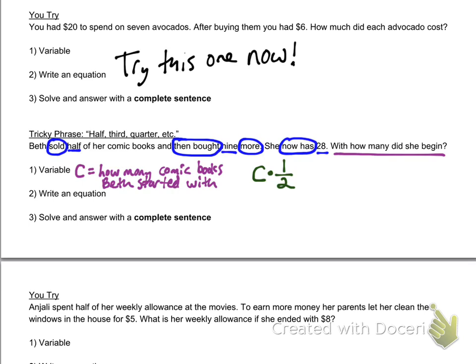Beth sold half of her comic books and then bought nine more. Let's circle these. She sold half. She started with C and then sold half of them. That's going to look like this: C times one-half. If she then bought nine more, that means she's going to add nine. If she sold half, I can multiply by half because that's how many she had left. She sold half and kept half. She then bought nine more, so that's plus nine, and she now has 28.